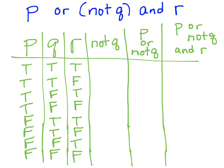Now let's look at the statement not Q. You learned that the negation of a statement always makes the opposite claim, so its truth value is always going to be opposite whatever that proposition was. In the first row, if Q is true, then not Q is false. So anytime Q is true, not Q will be false, and anytime Q is false, not Q will be true. We end up with alternating true-trues and false-falses.